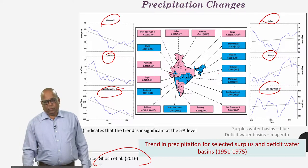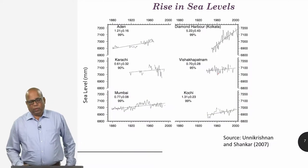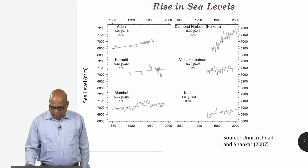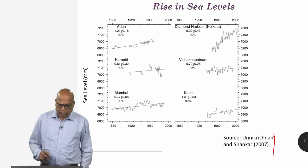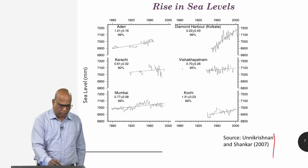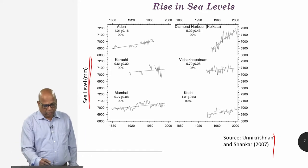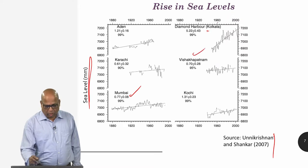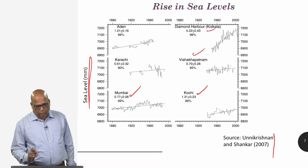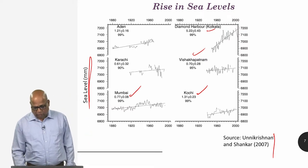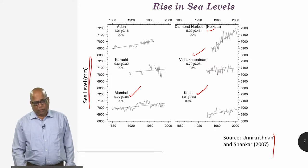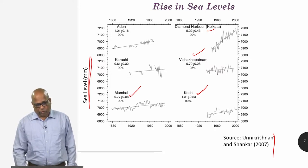That covers temperature and precipitation changes. What is less known, however, is the rise in sea levels. Unikrishnan and Shankar have done a very nice study on observational changes in sea levels, taking several stations including Mumbai, Vishakhapatnam, Kolkata and Kochi in India. In general, they see that the sea levels are in fact rising. These are the observational evidences that are available for climate change.